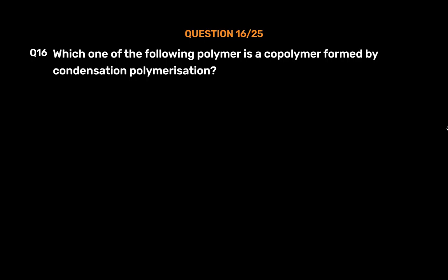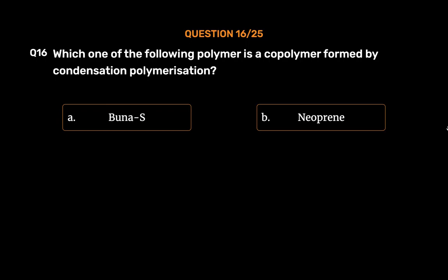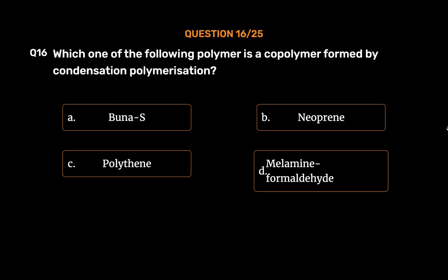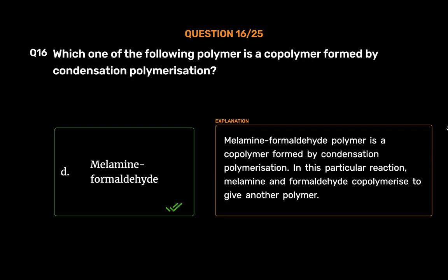Question number 16. Which one of the following polymers is a co-polymer formed by condensation polymerization? Option A, Buna-S; Option B, neoprene; Option C, polythene; Option D, melamine formaldehyde. The correct answer is Option D, melamine formaldehyde. Melamine formaldehyde polymer is a co-polymer formed by condensation polymerization, in which melamine and formaldehyde co-polymerize to give the polymer.